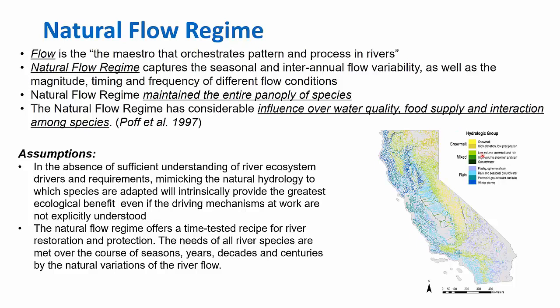Something to mention is that this is the natural flow regime—these are nine natural stream flow classes that we have determined for the state. So we do know how the rivers naturally flow in California. That is extremely cool.